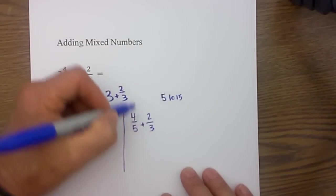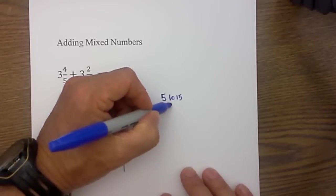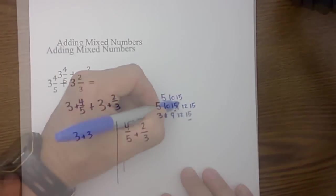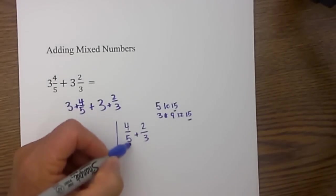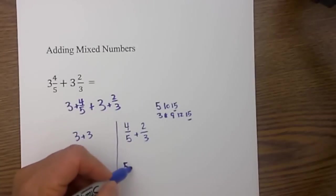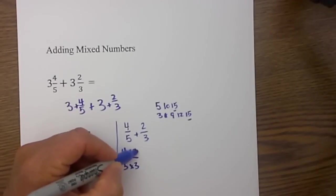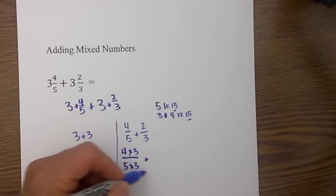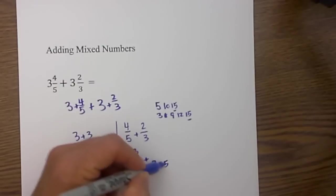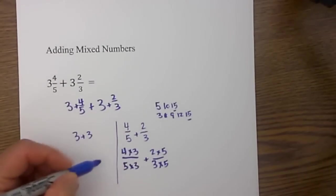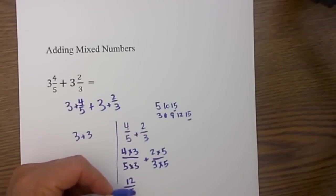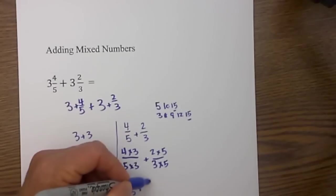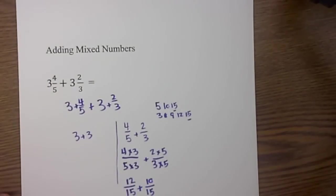5, 10, 15 and then I will use 3, 6, 9, 12, 15. Now that we have a common denominator of 15 I will rewrite these fractions. So 5 goes into 15 3 times so 5 times 3 and 4 times 3 plus 3 goes into 15 5 times 3 times 5 over 2 times 5. So then we have 4 times 3 is 12 over 15 plus 10 over 15 and that is going to equal 22 over 15.